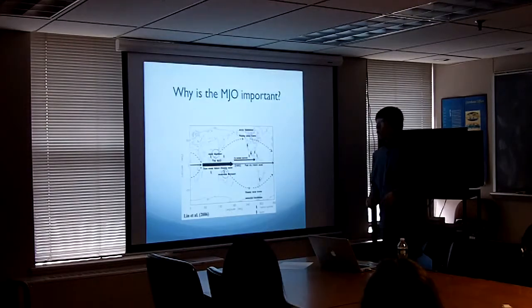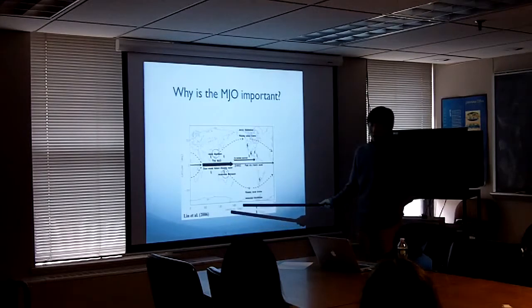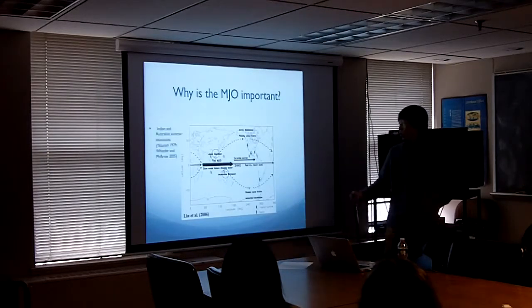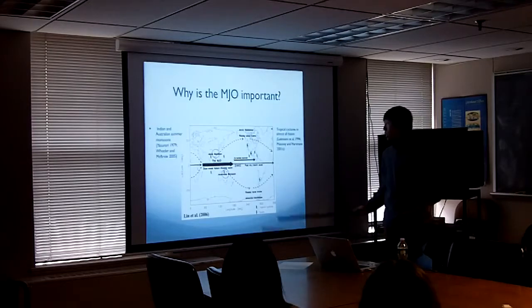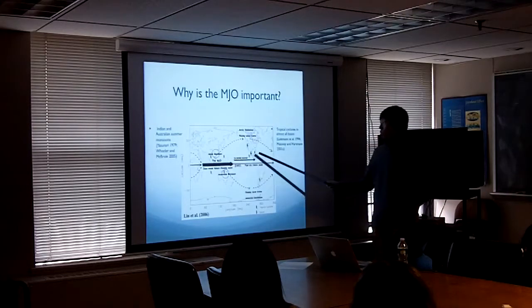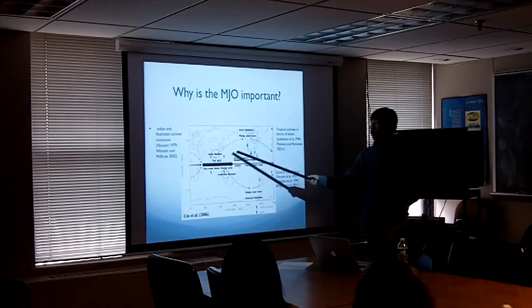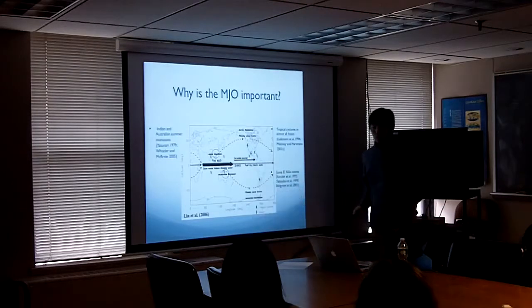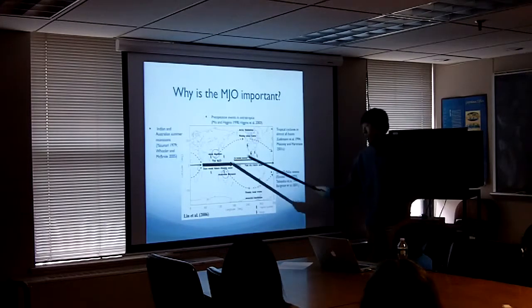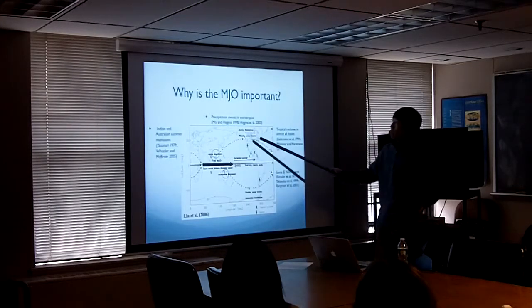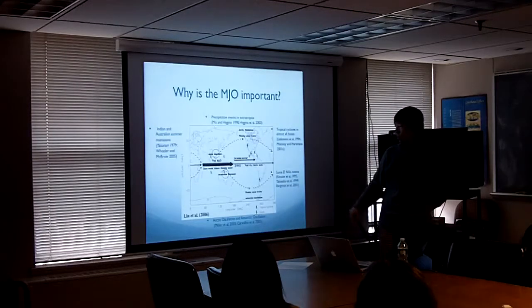That's one reason why the MJO is important. This plot from Lin et al. 2006 nicely summarizes the impact of MJO. Previous studies showed that MJO affects the active and break phases of Indian and Australian monsoons, affects the frequency of tropical cyclones in almost all basins, interacts with El Niño events — MJO-associated westerly wind bursts can trigger ENSO — and also affects extreme precipitation events over the extratropics and polar regions, including the AO and NAO.